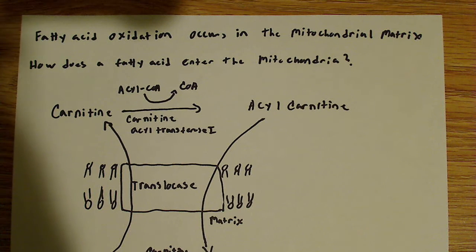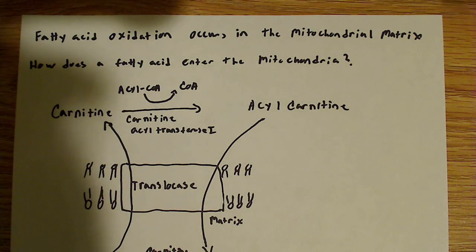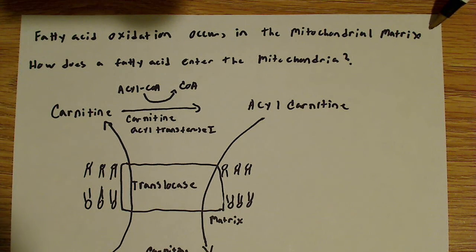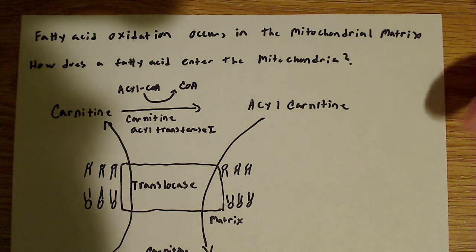And that's rightfully so because it creates the proton gradient that's used to drive ATP synthesis. So this is not going to cross easily. So the question becomes, how does it cross?